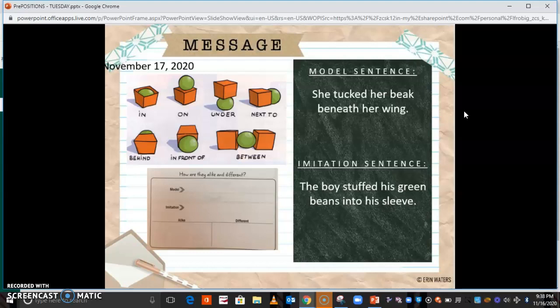And then we're gonna go to my imitation sentence, and we're gonna record my imitation sentence. So the imitation sentence says, 'The boy stuffed his green beans into his sleeve.' So let's look at this sentence. I'm gonna point out all the ways that I think that they might be alike or different. If you notice anything else, please record them on your paper.